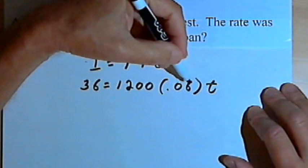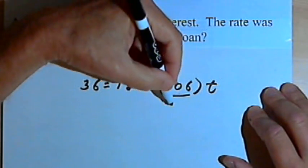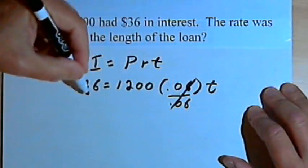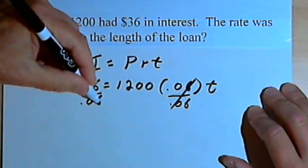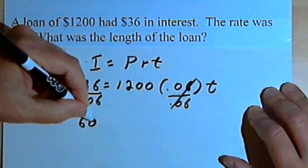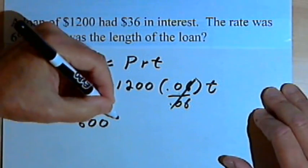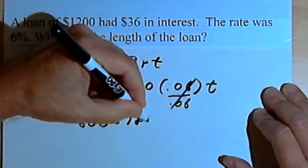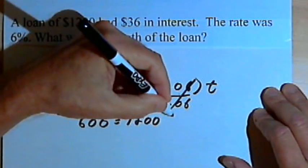I'm going to start this one by dividing by 0.06. 36 divided by 0.06 is 600. So I've got 600 equals 1200 T.